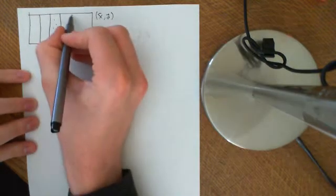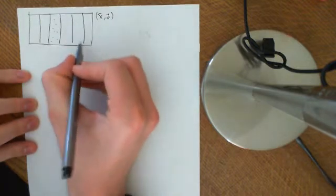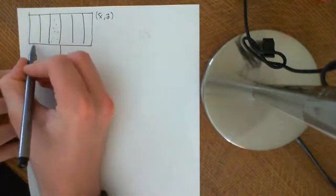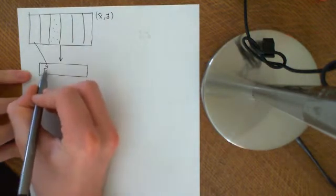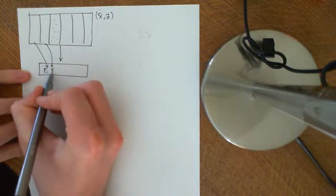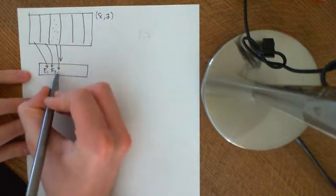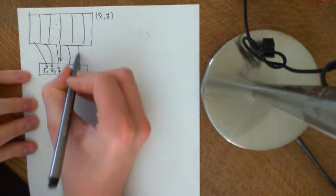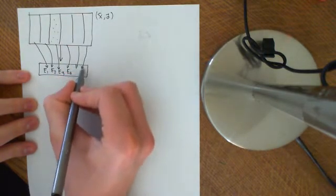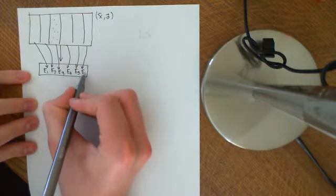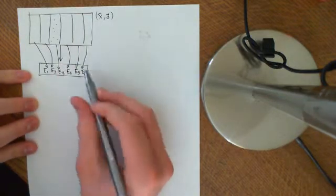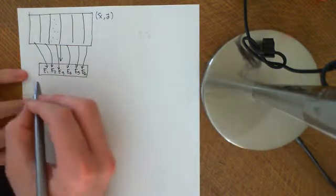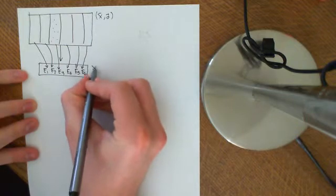We were then going to use these equivalence classes — we were going to put all these equivalence classes into a new set. So we'd have equivalence classes E1, E2, E3, E4, E5, and E6. There could be arbitrarily many of them. We put all the equivalence classes together in a new set, and we call this set our new set X.